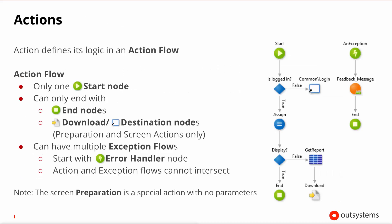So what is an action? An action is a sequence of statements that are executed in a certain order. An action flow always starts with a start node and can end in an end node, and that's normally how you end it. In case you're implementing a screen action, it can actually finish in a download or a destination. It's possible to have subflows inside an action flow for exception handlers, and we will cover this in a different lesson.